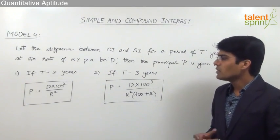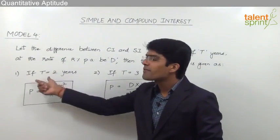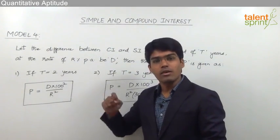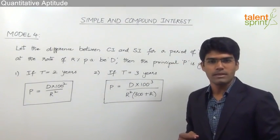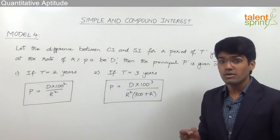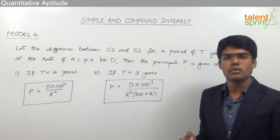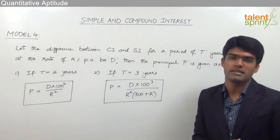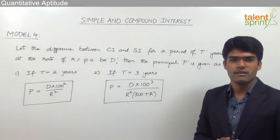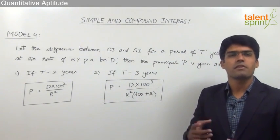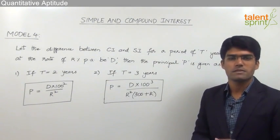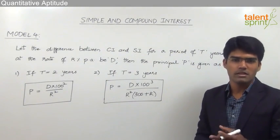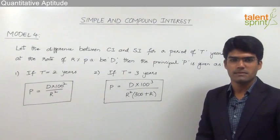We don't have any formula for a time period of 1 year, because as we have learned in the introduction part of this topic, there is no difference between simple interest and compound interest for the first period, that is for the first year. So the difference is always 0 for the first period for a given rate of interest and the given principal.